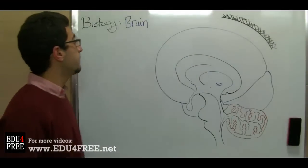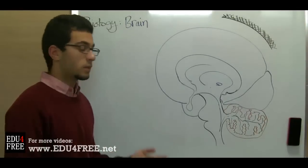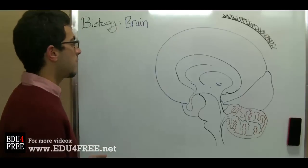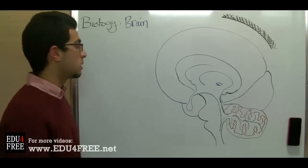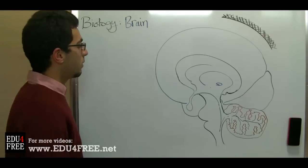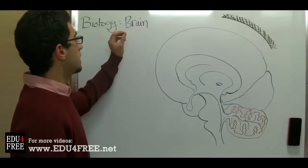Assalamu alaikum. Today I'll be talking about the brain. Previously we talked about the nerve and the nerve cell synapses, how the nerve pulse moves through the nerve cells. So today we will begin talking about the first part of the central nervous system, which is the brain.